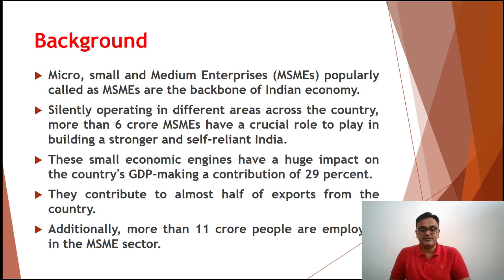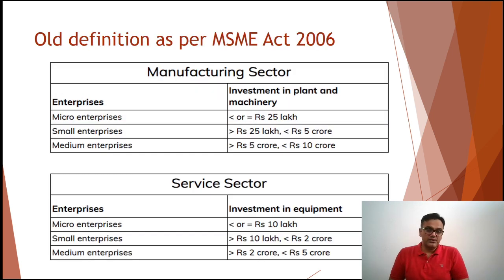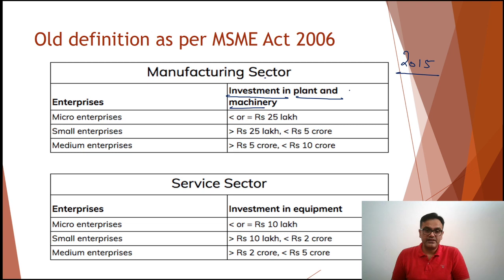If this figure seems a bit lower than the economic survey figure, the reason is that we have seen a lot of unemployment generated and a lot of reverse migration happened. So the figure of 12.6 crore that the economic survey had given for MSME employment has now gone down to 11 crore people employed in the MSME sector. Now the old definition as per the MSME Act was basically focused upon the investment in plant and machinery — this was the core basis of the definition.